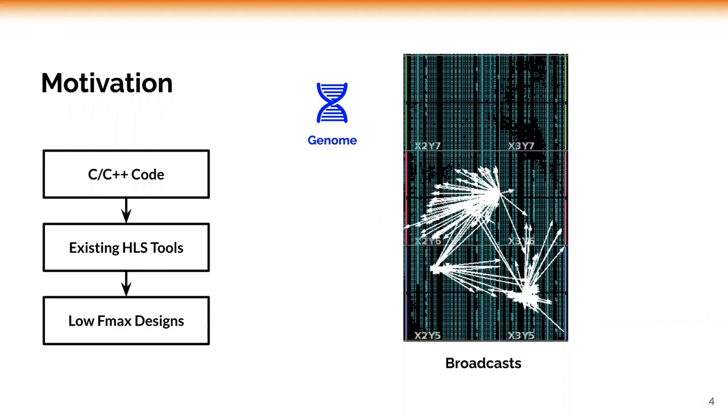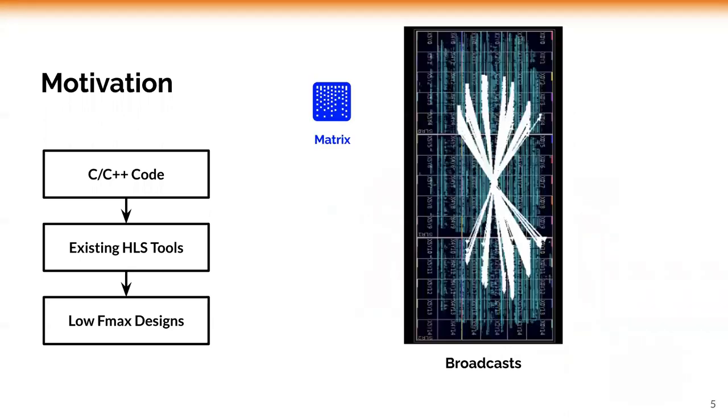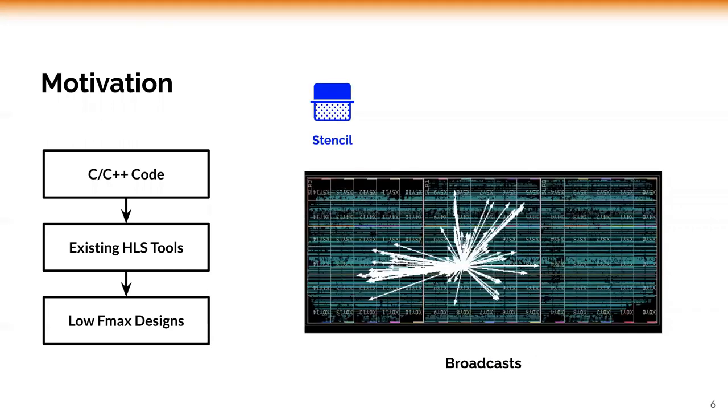For one genomic accelerator, there are lots of local broadcasts as shown. For this matrix multiplication design that binds all three dies of the AWS data center FPGA, we observe broadcasts that reach across the whole chip. For one stencil computing accelerator, we also observe broadcasts of signals across multiple dies of the large data center level FPGA.